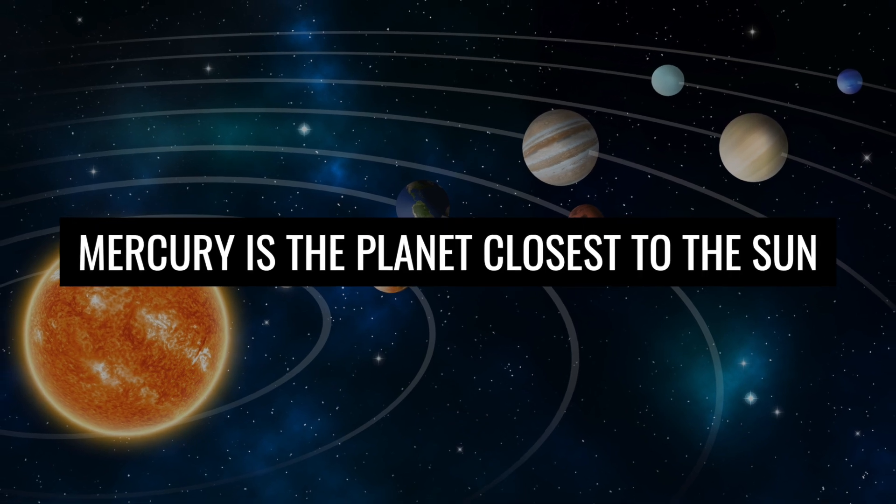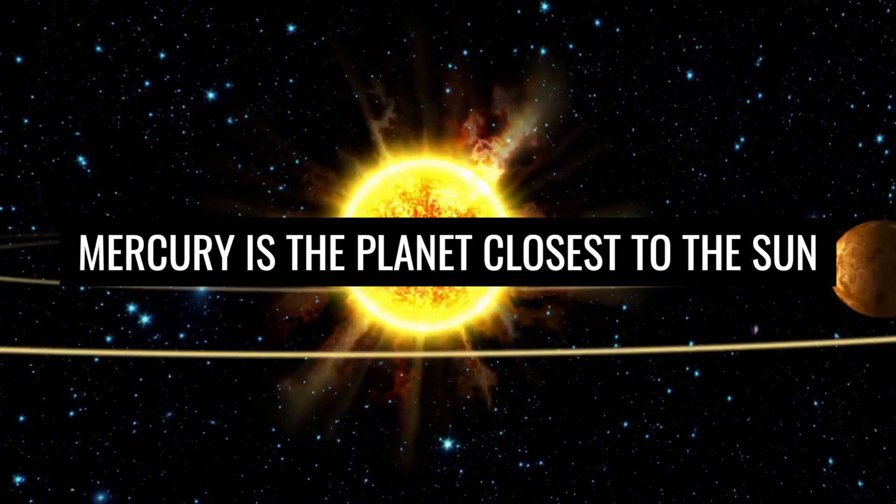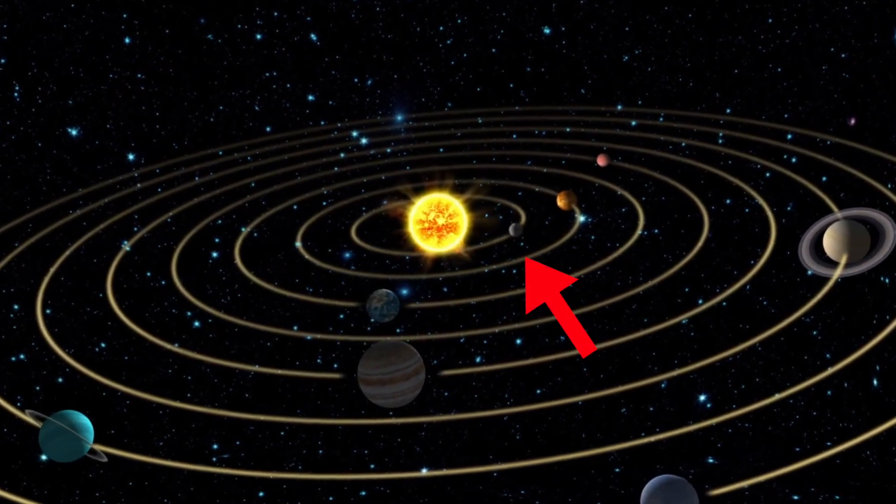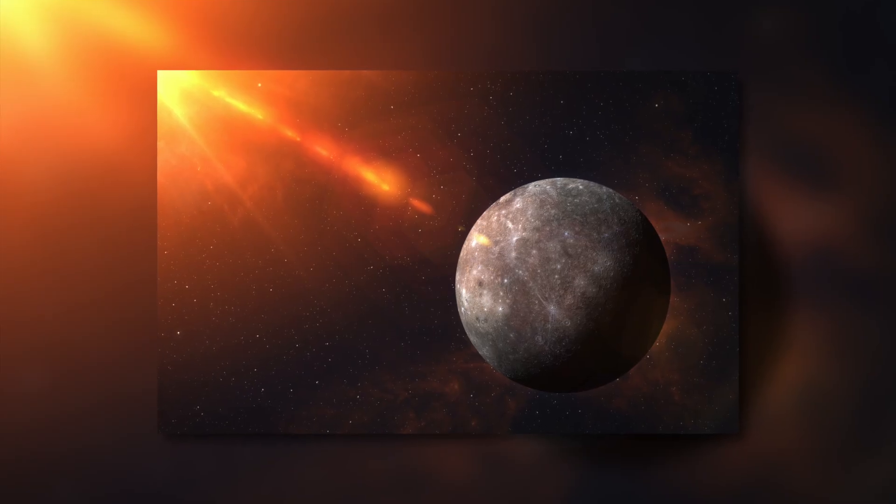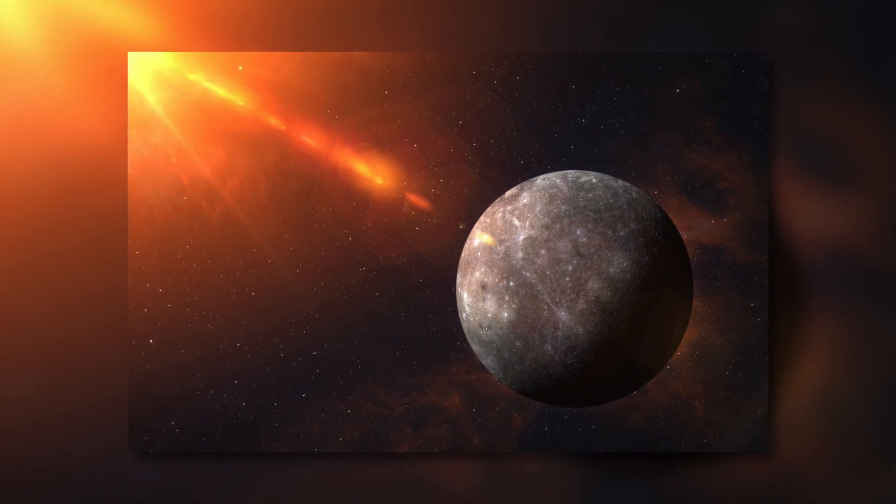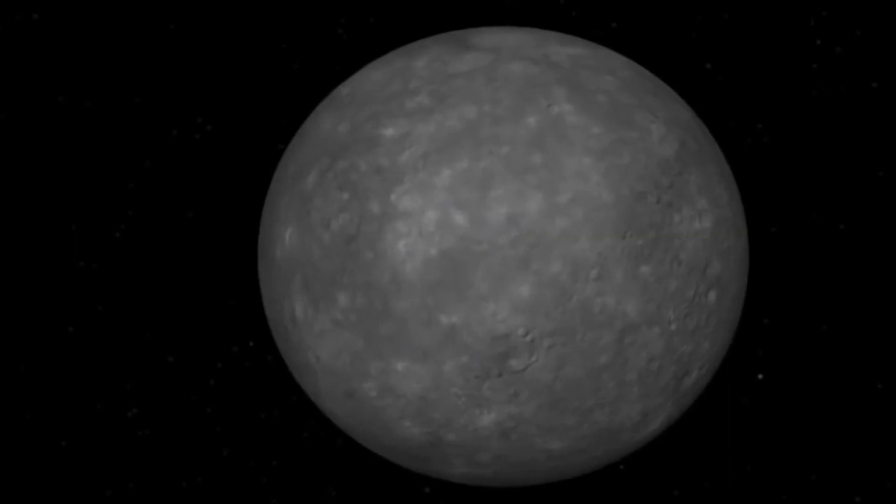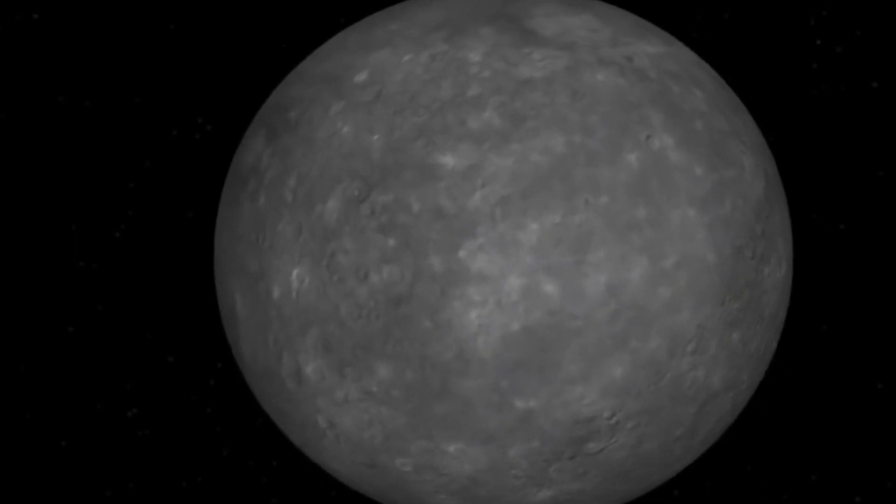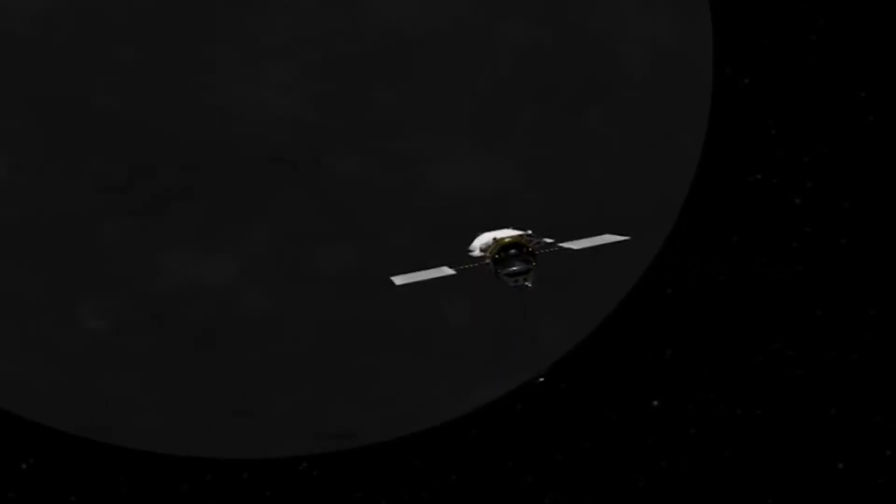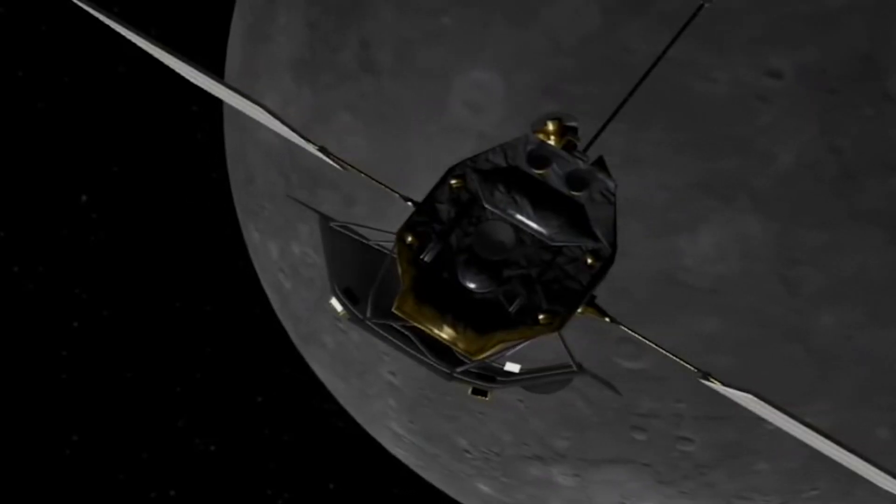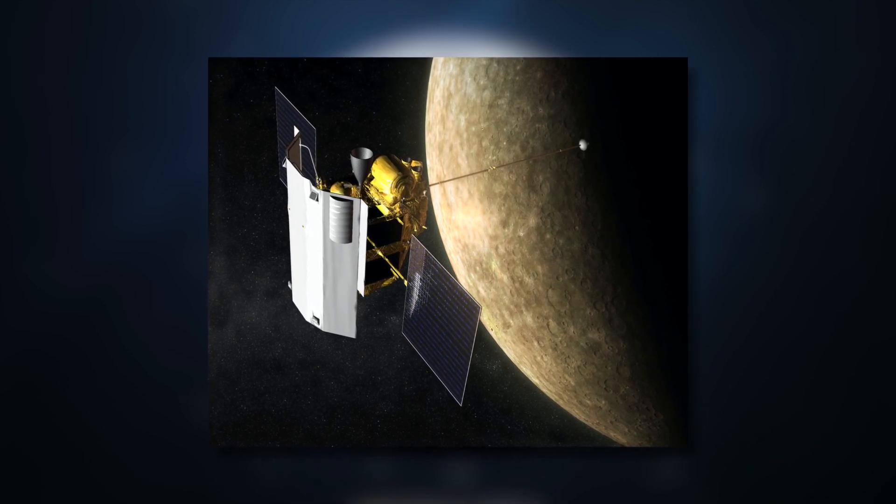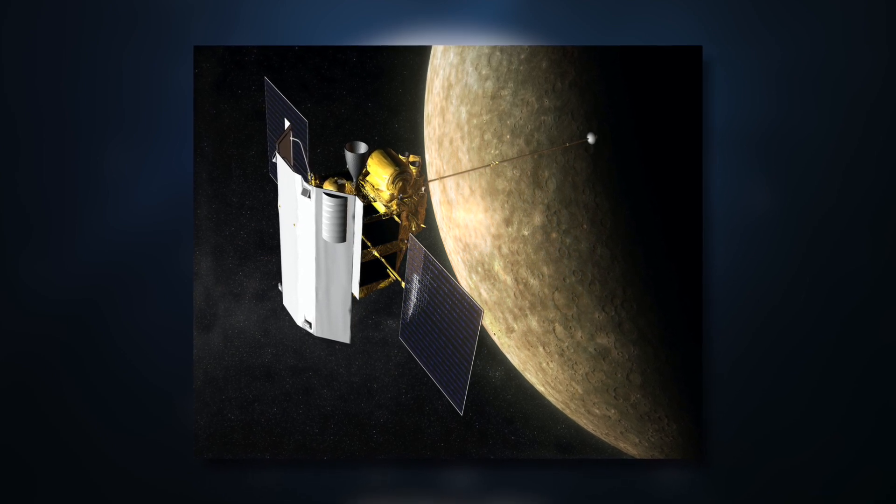Mercury is the planet closest to the Sun. As such, it orbits the Sun faster than all other planets, which is why the Romans named it after their swift-footed messenger god. Because the planet is so close to the Sun, Mercury's surface temperature can reach 450 degrees Celsius or 840 degrees Fahrenheit. However, since there is hardly a real atmosphere on this world in which heat can be trapped, temperatures can drop to minus 170 degrees Celsius or minus 270 degrees Fahrenheit at night, which corresponds to a temperature fluctuation of more than 600 degrees Celsius or 1,100 degrees Fahrenheit, the largest in the solar system.